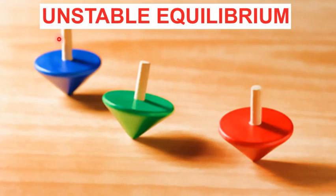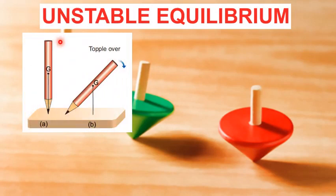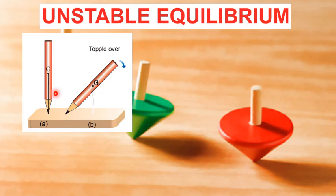In unstable equilibrium, take a pencil and try to keep it in the vertical position on its tip, as you can see in this figure. Whenever you leave it, the pencil topples over about its tip and falls down.